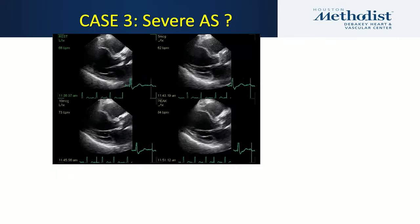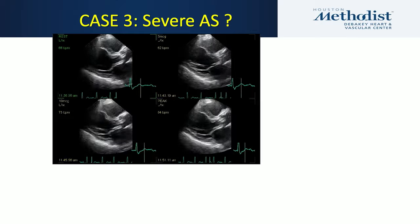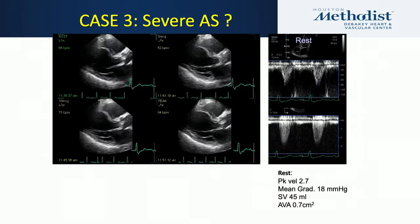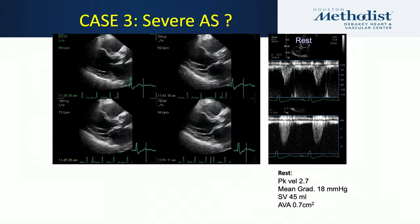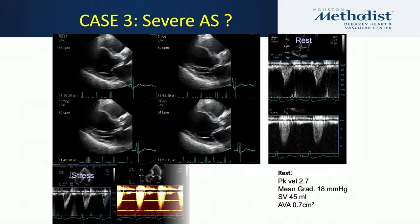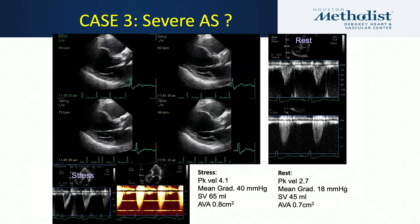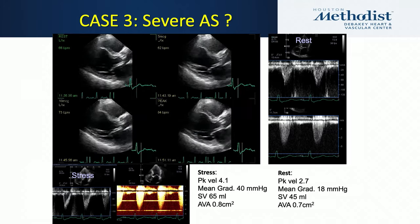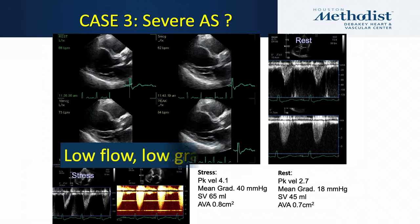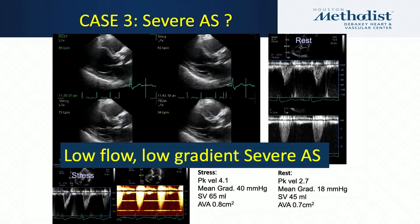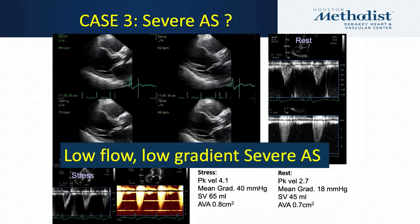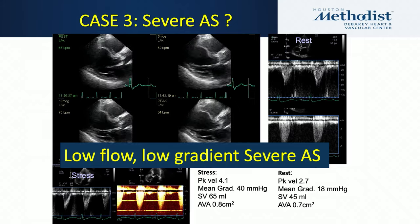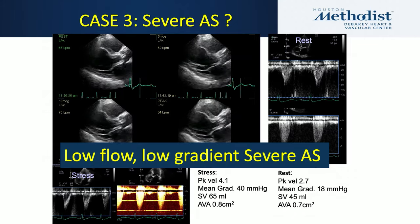A different case: the question is severe aortic stenosis. With a depressed ventricle, resting Doppler shows a stroke volume of 45 and a valve area of 0.7, with mean gradient of only 18. With dobutamine and flow augmentation, the mean gradient goes up to 40, the valve area stays roughly the same, but stroke volume increases. This reveals low-flow, low-gradient, true severe aortic stenosis. This emphasizes that the flow upstream of the valve matters very much — relevant to mixed valve disorders as well.